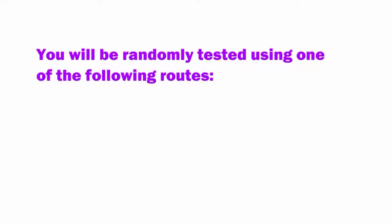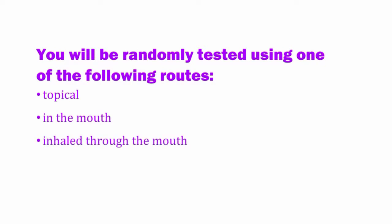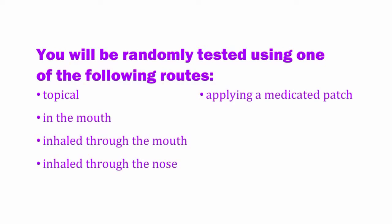In the randomized skills demonstration, you will be tested on your ability to give medication as a complete process, including getting ready to give the medication, giving it, and then writing down that you gave it. You will be randomly tested using one of the following routes: topical, in the mouth, inhaled through the mouth, inhaled through the nose, applying a medicated patch, in the eye, or in the ear.